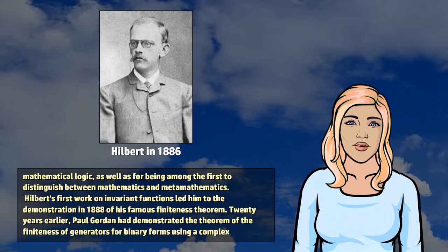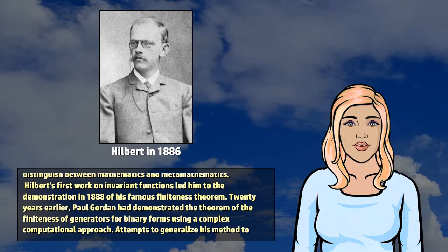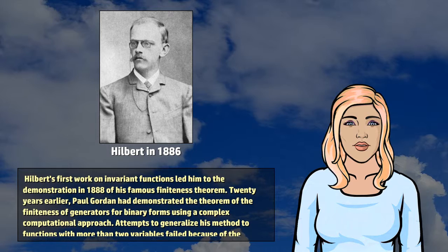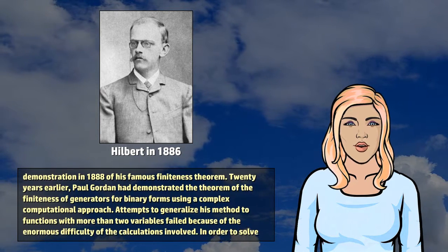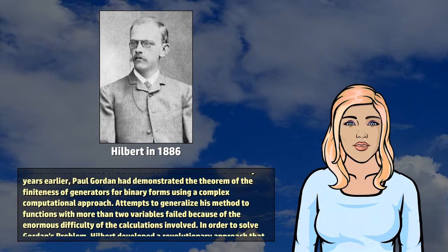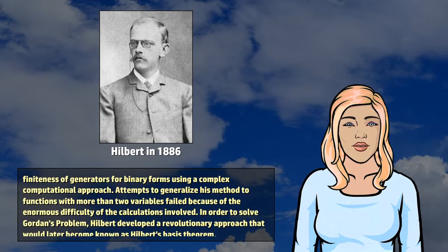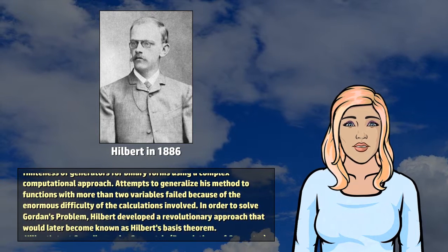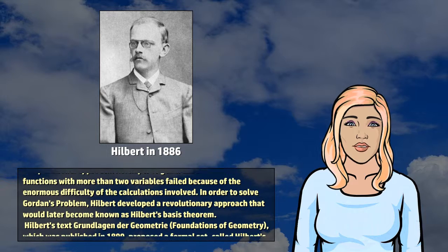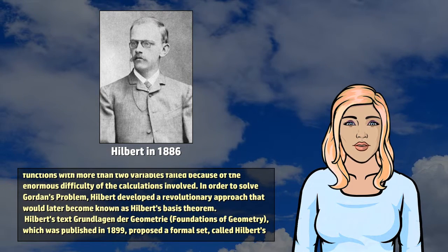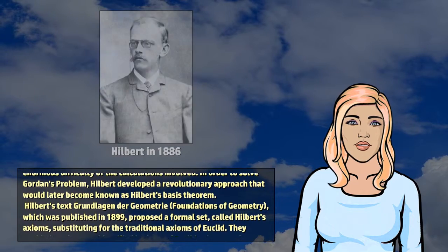Hilbert's first work on invariant functions led him to the demonstration in 1888 of his famous finiteness theorem. Twenty years earlier, Paul Gordon had demonstrated the theorem of the finiteness of generators for binary forms using a complex computational approach. Attempts to generalize his method to functions with more than two variables failed because of the enormous difficulty of the calculations involved. In order to solve Gordon's problem, Hilbert developed a revolutionary approach that would later become known as Hilbert's basis theorem.